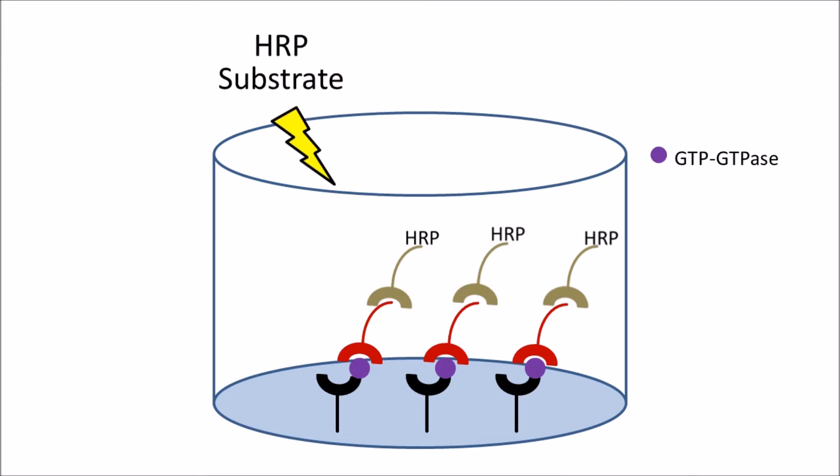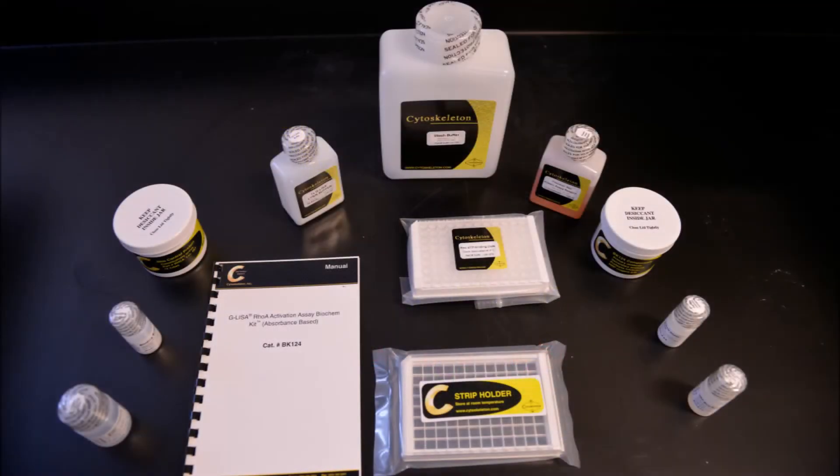The HRP bound secondary antibody is detected by either measuring absorbance or luminescence associated with an HRP substrate added to each well. The remainder of this video will describe how to perform G-LISA activation assays. G-LISA kits have all the reagents needed to carry out the activity assays. Researchers only need to provide lysates, PBS and concentrated sulfuric acid.